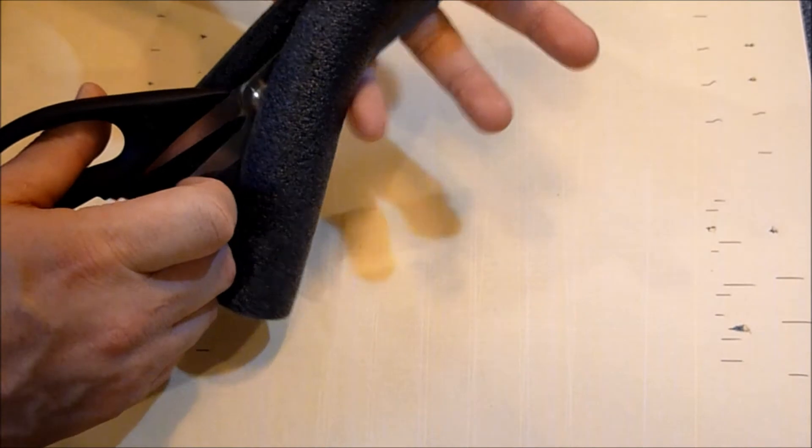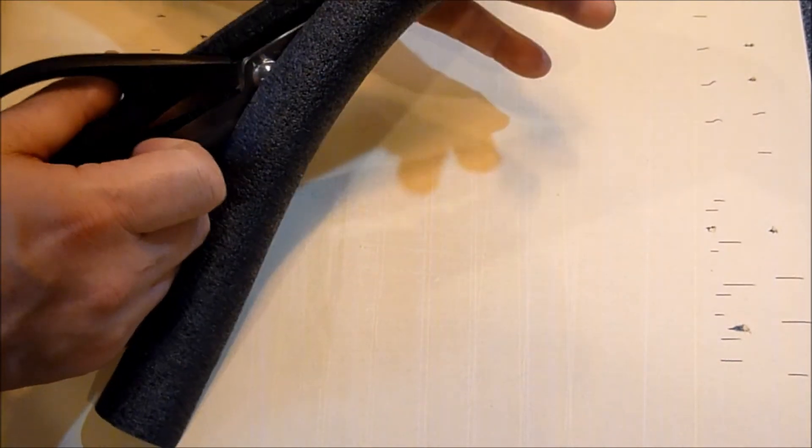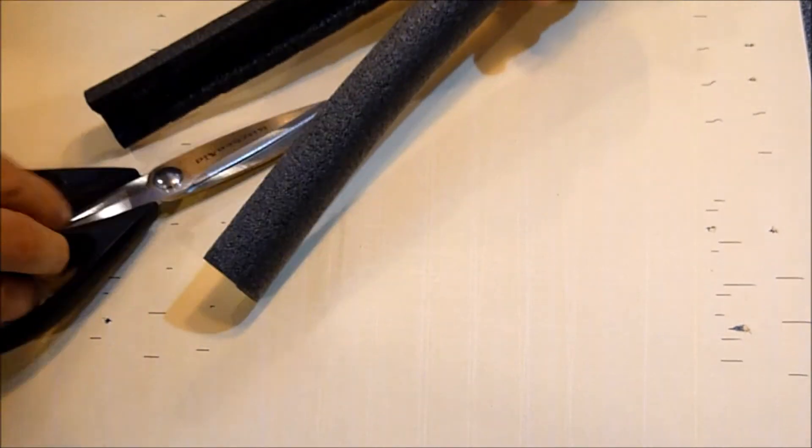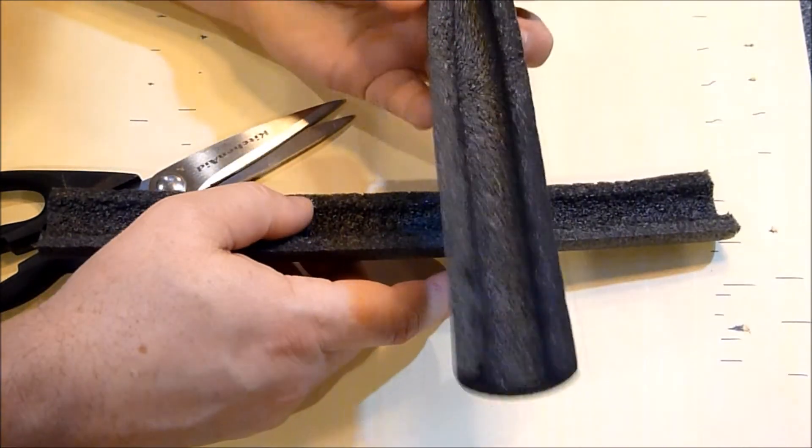When you buy the foam, don't buy the foam with the adhesive built-in. Buy the foam that's just sliced, not anything with adhesive. And here you go, you have your roller coaster track.